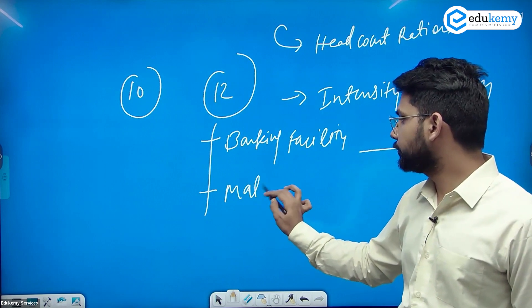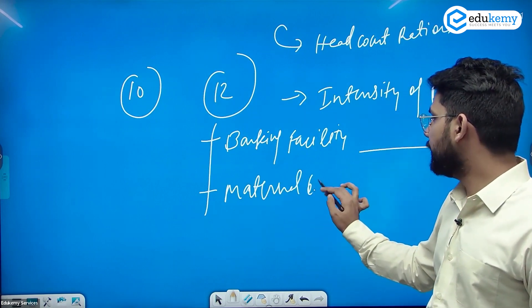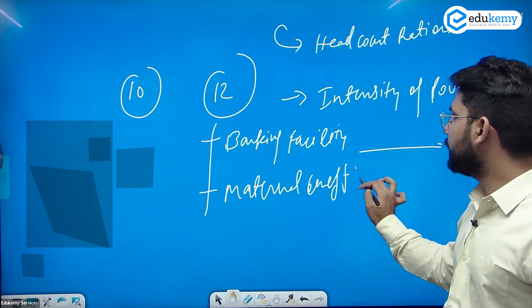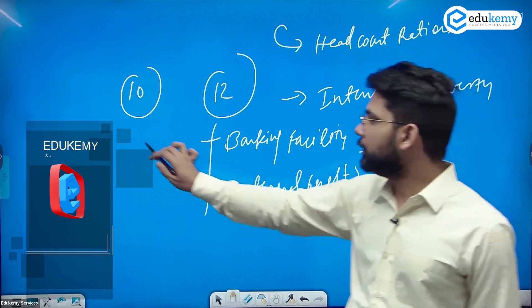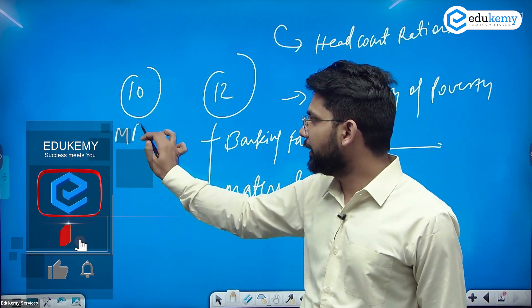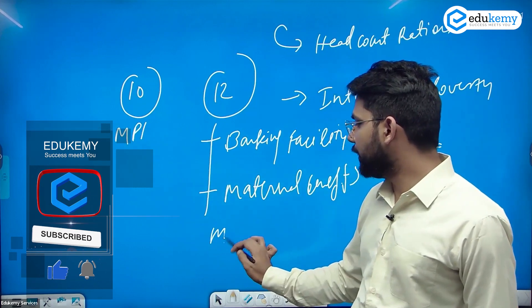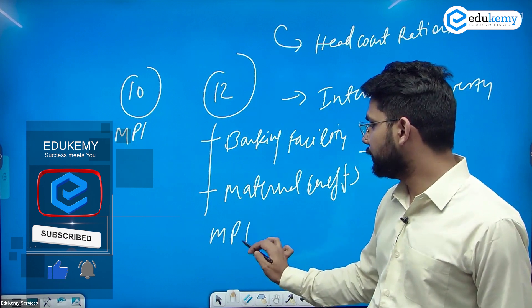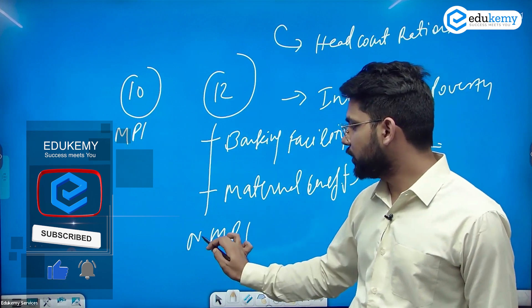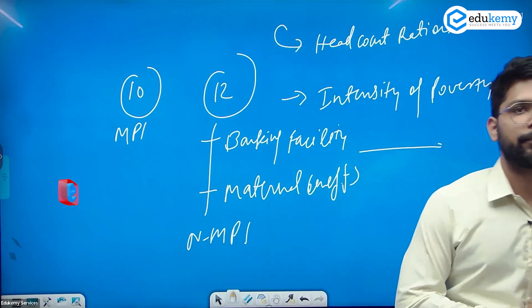The second extra indicator is maternal benefits. This is the key difference between the worldwide Multi-Dimensional Poverty Index and India's National Multi-Dimensional Poverty Index.